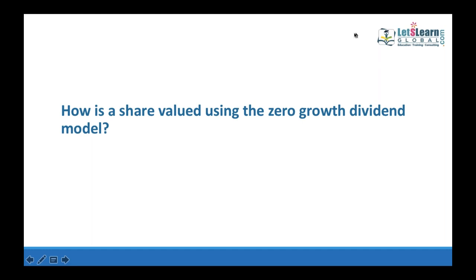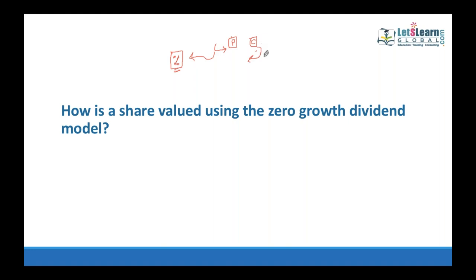How is a share valued? When valuing a share, check whether it is preference or common. An investor has an opportunity cost — what he would earn if he invested elsewhere. That is his expected or required rate of return. For preference shares, which have no growth in dividend, the formula is: value equals annual fixed dividend divided by the investor's required rate of return.